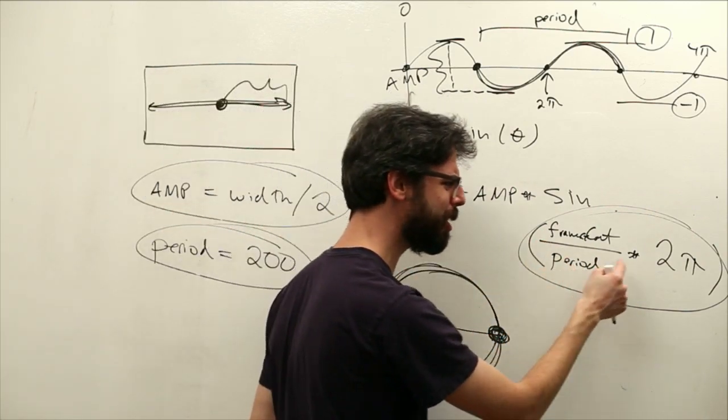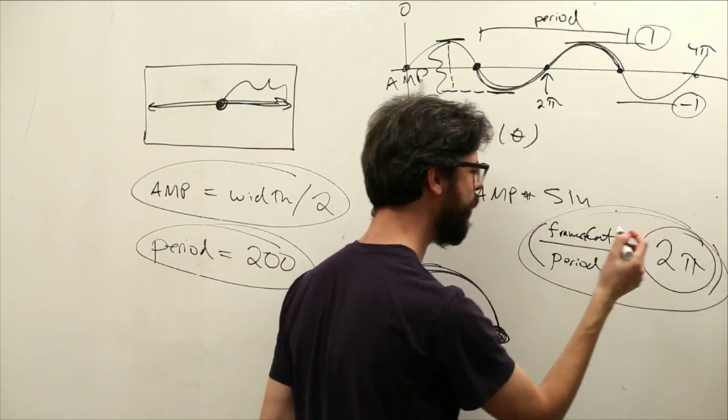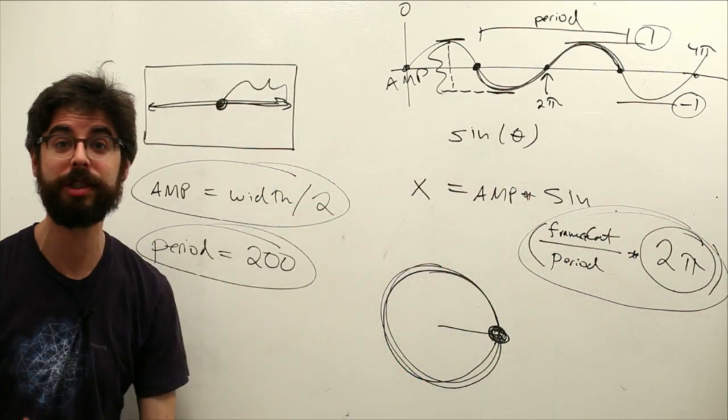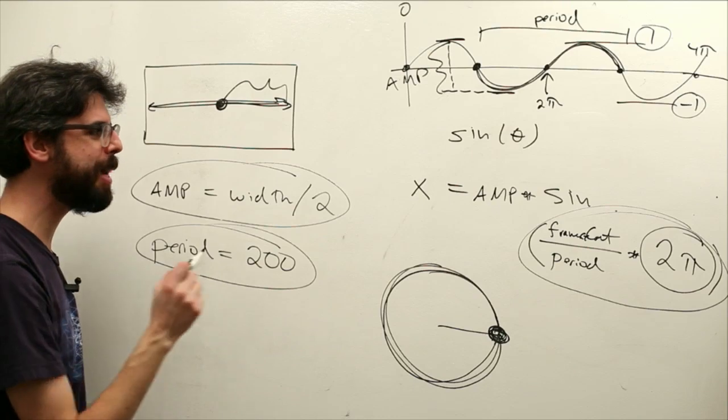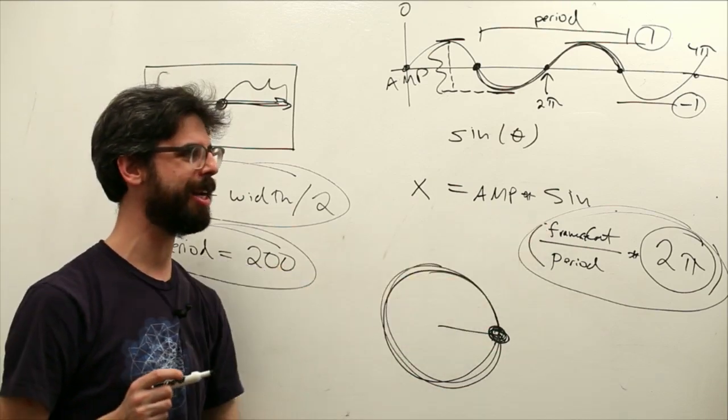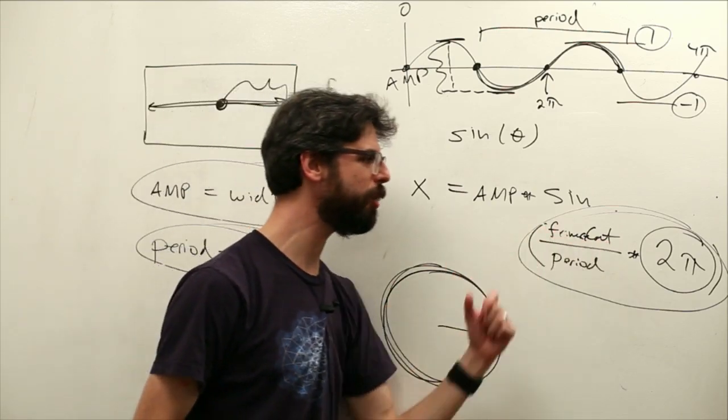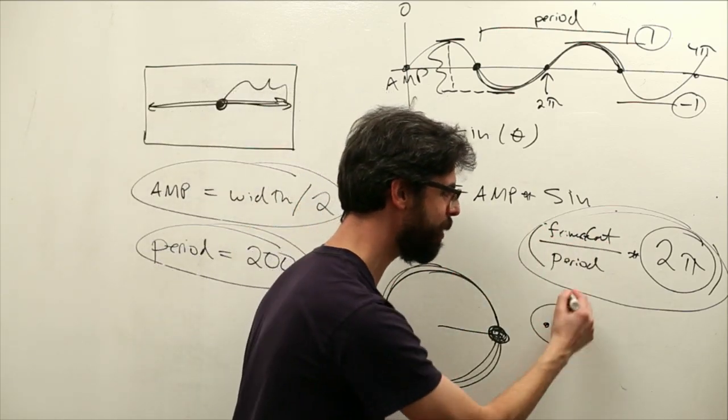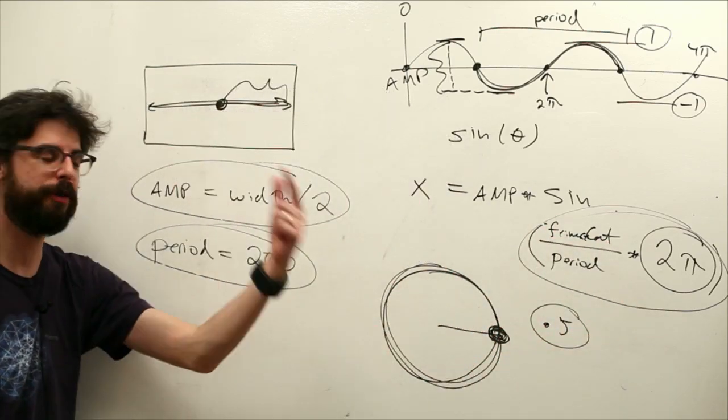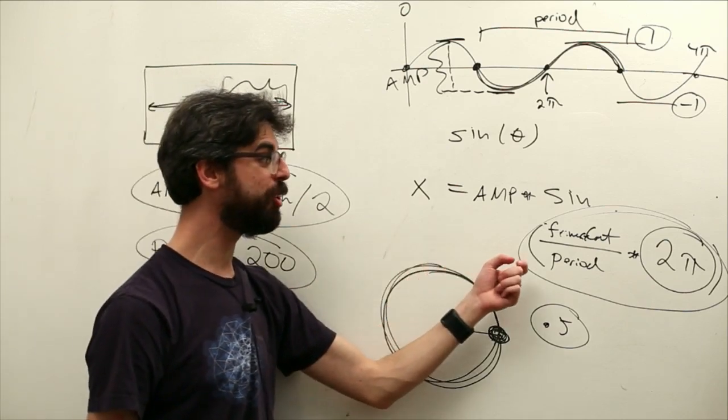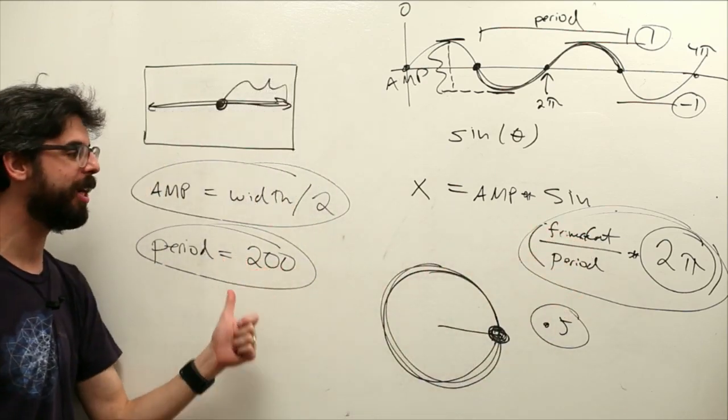Frame count divided by period times 2pi. Well remember, 2pi gives us a full cycle through the sine function. So when frame count is 0, what's 0 divided by period? 0. When frame count is 100, what's 100 divided by period? 0.5. So we're halfway through the full cycle. When frame count is 200, 200 divided by period is 1.